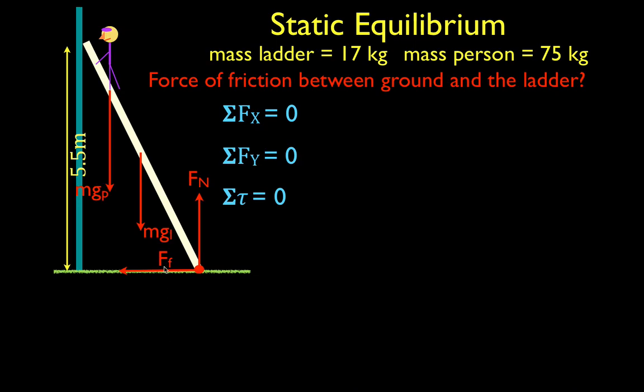Now we have one force in the x direction. Right here the ladder is leaning against the wall. The ladder is not falling through the wall, so there must be some other force keeping the ladder from doing so — that's the force on the ladder from the wall. Those are all of the forces acting in this problem. All the forces are acting either in the x direction or the y direction, so we don't need to break any of them into their components.